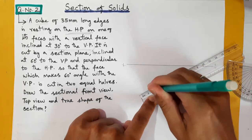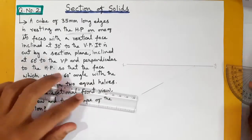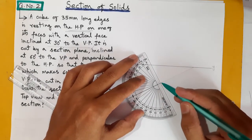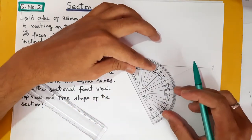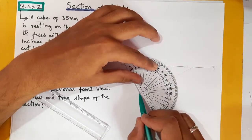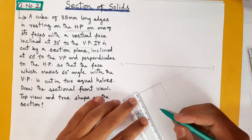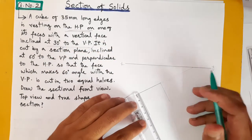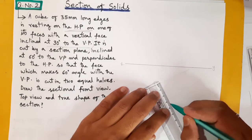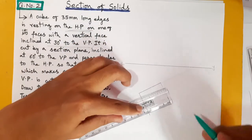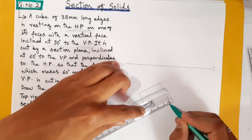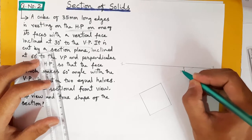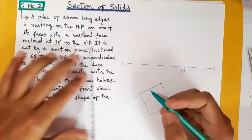Using the perpendicular, we measure 35 mm on all sides to complete the top view of the cube. The angle is 30 degrees as per the question. Now let us project the front view.